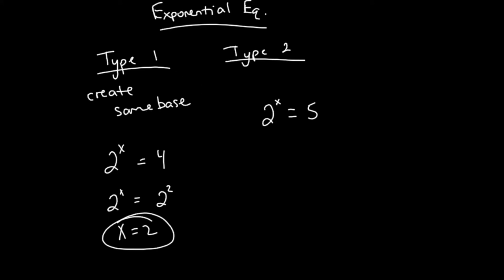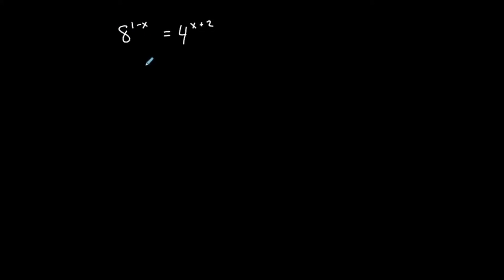And different powers of numbers. So if I look at this, this is example 1: 8 to the 1 minus x is equal to 4 to the x plus 2. You know, 8 is a multiple of 4, but I can't raise 4 to any exponent to get 8. But they both can be represented as base 2. 8 can be represented as base 2 and so can 4. So this is a type 1 exponential equation. I can create the same base on both sides.